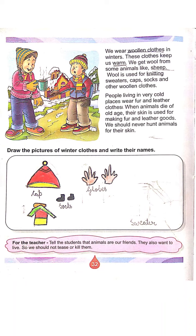Wool is used for knitting sweaters, caps, socks and other woolen clothes. People living in very cold places wear fur and leather clothes. When animals die of old age, their skin is used for making fur and leather goods. We should never hunt animals for their skin.